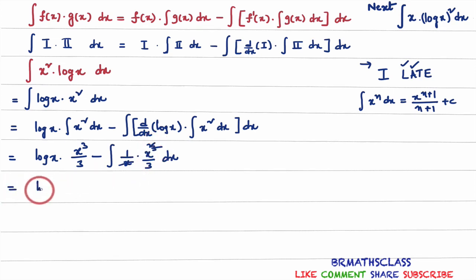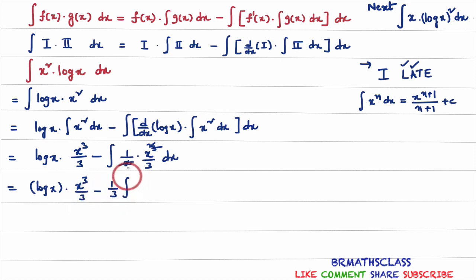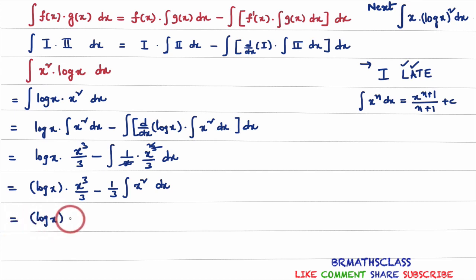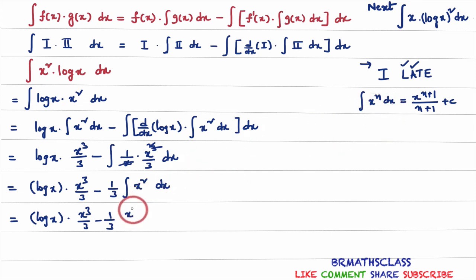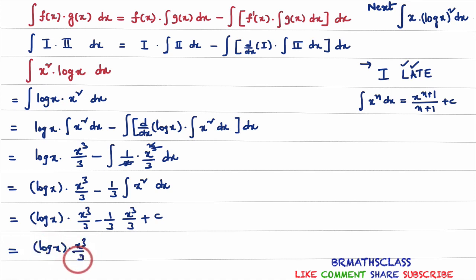If I simplify this further, you get log x into x cube divided by 3, minus here 1 by 3 is constant, take it outside. Integral of what is remaining — x square is remaining — integral of x square dx. That gives log x into x cube by 3, minus 1 by 3 into integral of x square dx. Applying the formula, integral of x square dx is x cube by 3 plus c. So the final answer is log x into x cube by 3, minus x cube divided by 9, plus c.